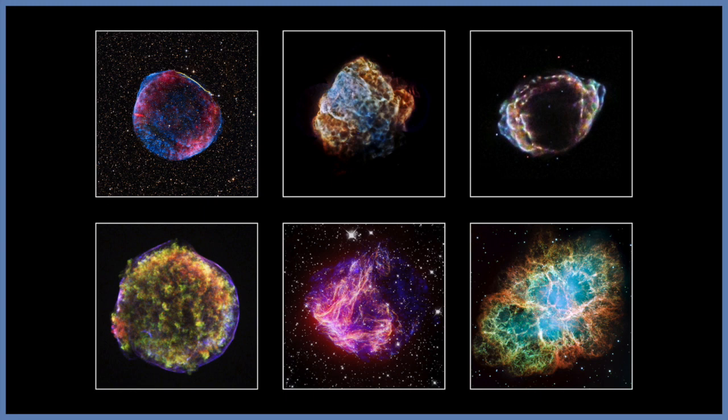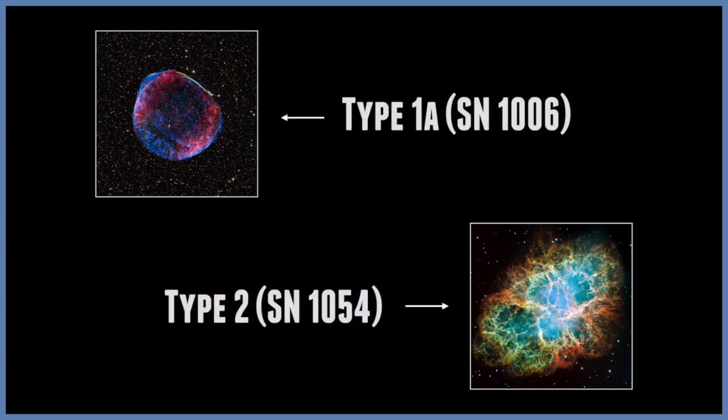So supernovae are categorised by letters and numbers, and these categories are defined in the brightness and dimness of a supernova, and also which elements are detected in the light of the explosion.